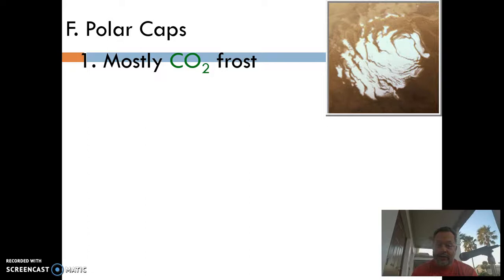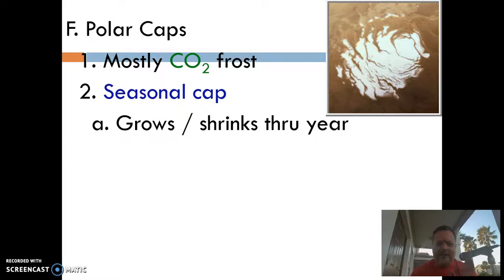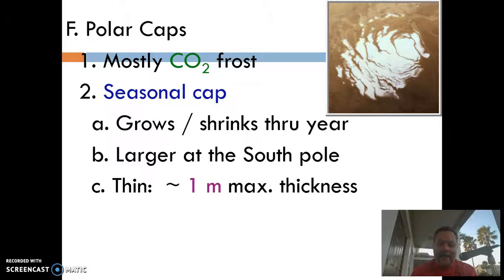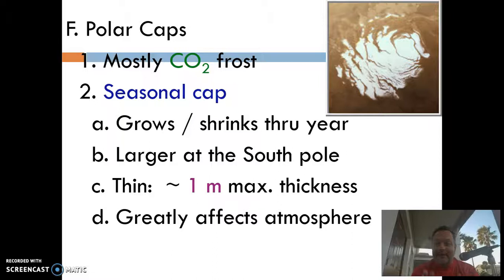Think of dry ice — that's really what you're looking at in the pictures. There is a layer of regular ice underneath. That dry ice is seasonal, because it doesn't take much heat at all for dry ice to become a gas. It sublimates — it goes directly from a solid to a gas. Especially the southern cap, which has a lot of dry ice. It's only about a meter thick.